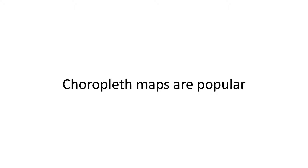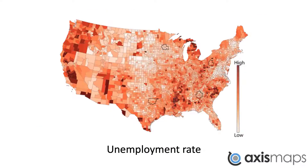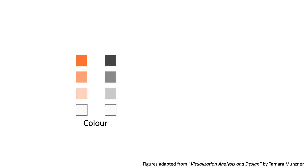Choropleth maps have been widely used to visualize areal data — for example, population density, unemployment rate, birth rate, and many more. A choropleth map uses colors to encode numeric values from small to large.